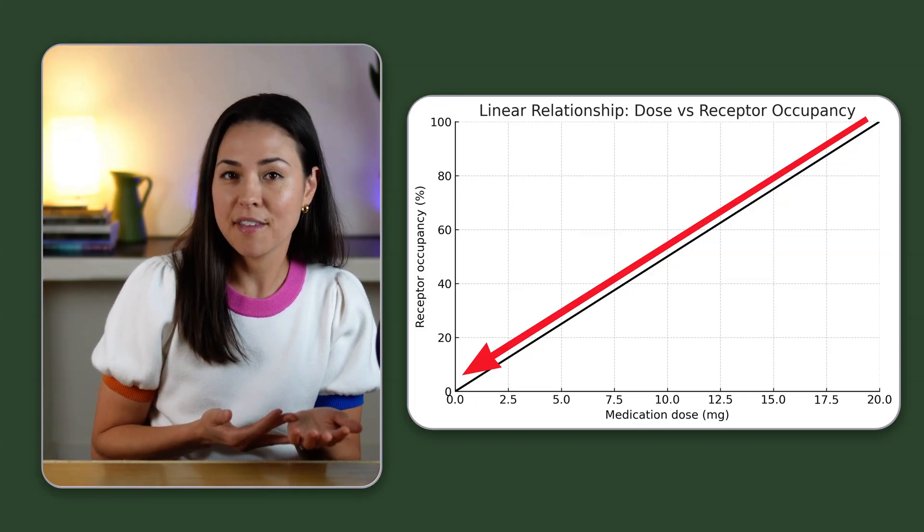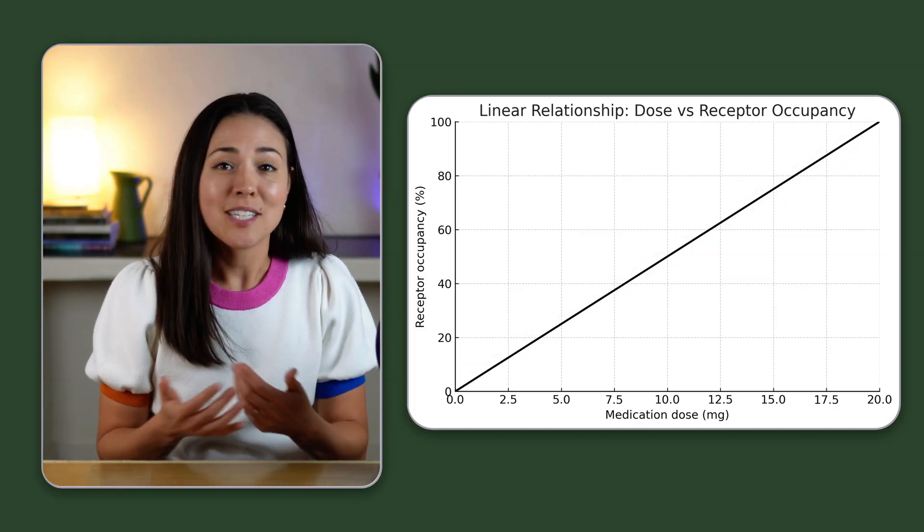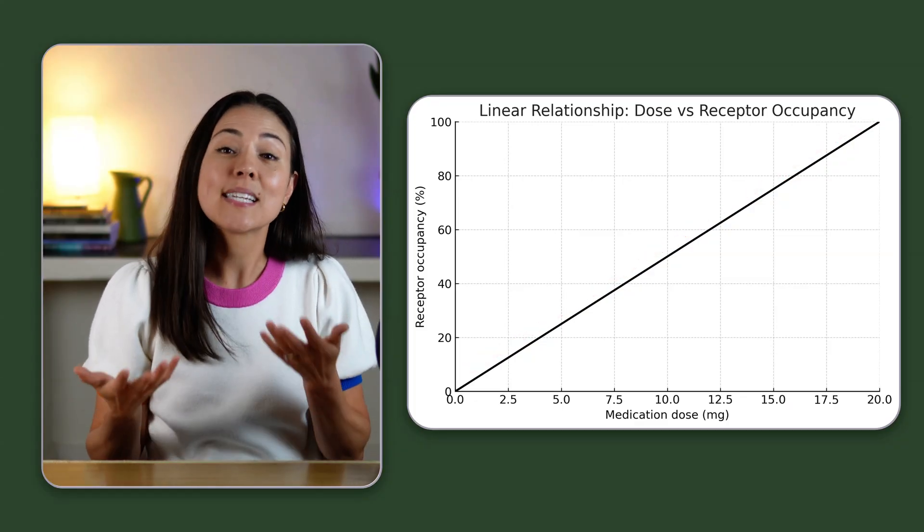Most people assume that antidepressant tapering is simple math. If you cut the dose in half, your brain experiences half the effect. And it feels logical. It's neat. It's the way that most people conceptualize this process. But that's not how the brain and these medications actually interact.